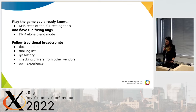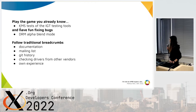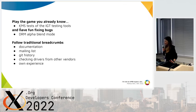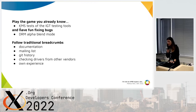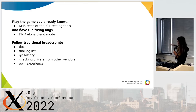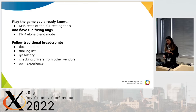I am not a good game player, so I started with something simple that is not really a game. I started from something I already know: the KMS test of the IGT test tools. And then I found something to fix — the DRM alpha blend mode. I checked all results of the IGT test and selected something where I had background knowledge and could actually do something.